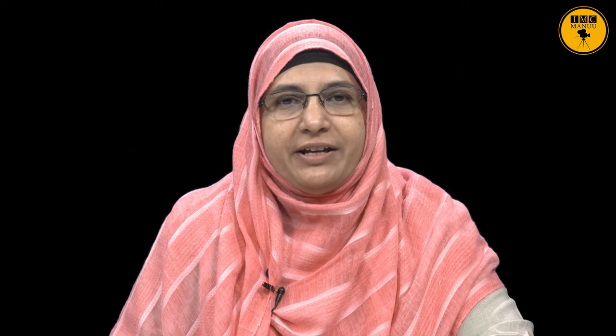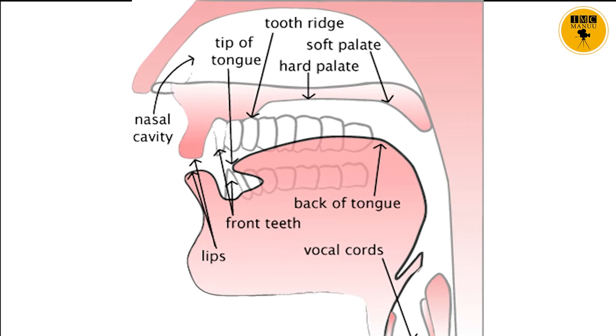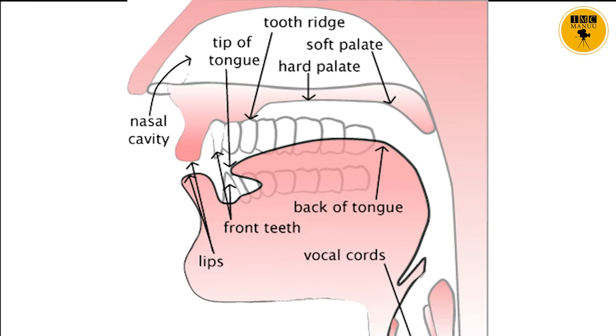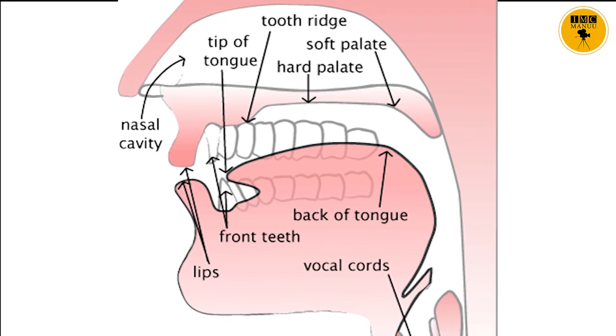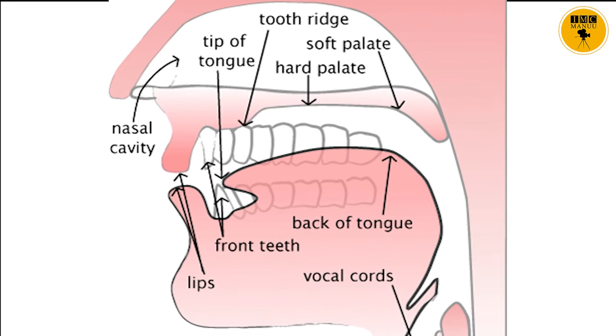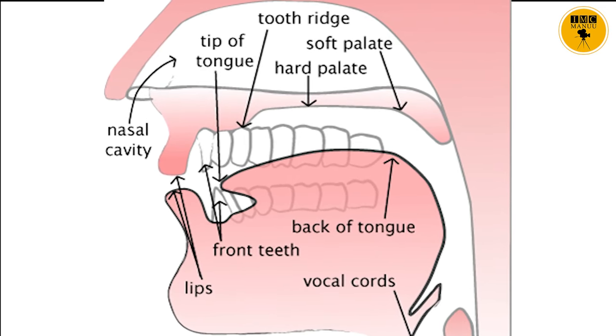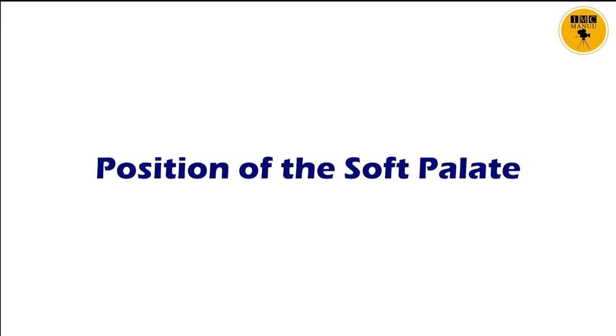This is how the vowels are classified — by the soft palate, by the tongue, and by the lips. Let us look at the first part: the position of the soft palate.